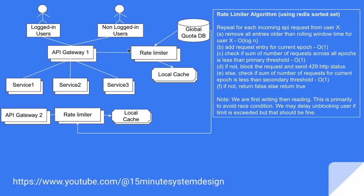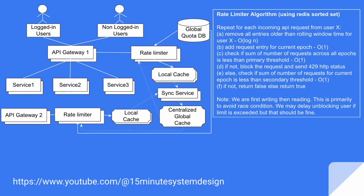Now, since we have built the rate limiter and discussed the algorithm and sliding window in cache, there can be multiple API gateways. If a user sends requests across different API gateways, they could exceed the overall primary limit. To solve this, we will have a local cache, but to ensure the global quota is honored, both local caches need to sync their data to a centralized global cache with the help of a sync service.